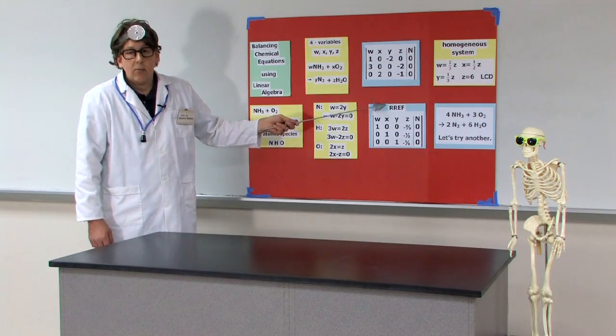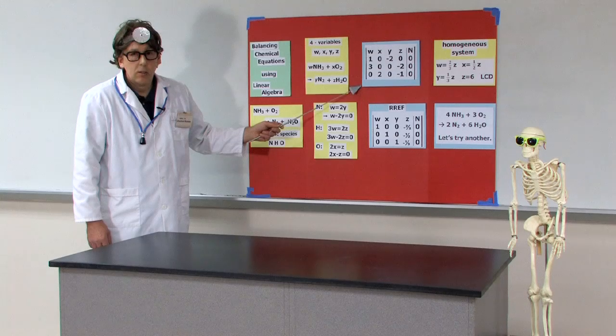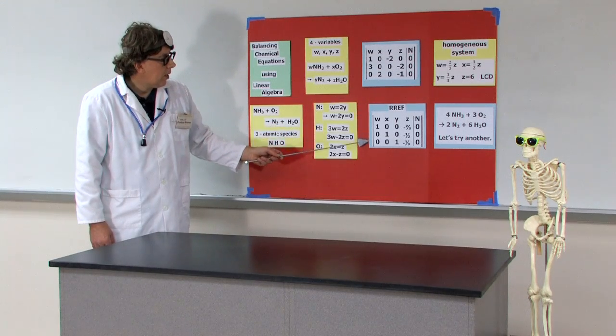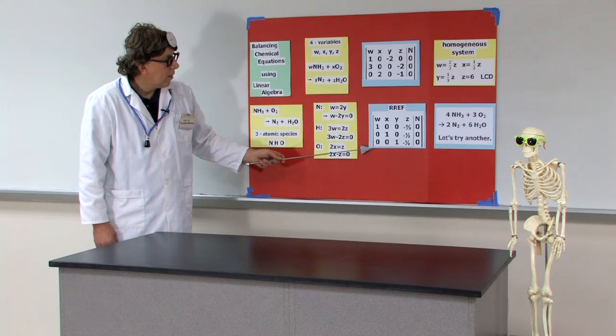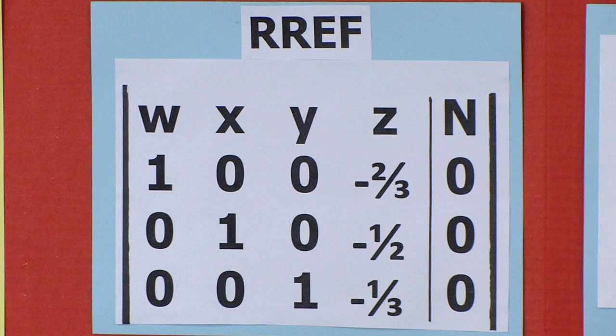Reduce row echelon form. As we run through these equations, we can do the matrix mechanics. The reduced row echelon form gives us what we're looking for. We look to the column Z. We've got minus 2 thirds, minus 1 half, minus 1 third.